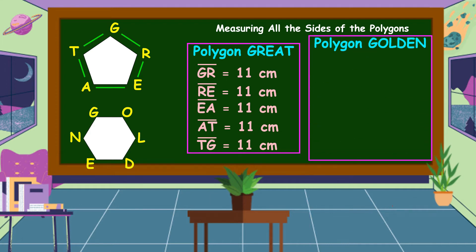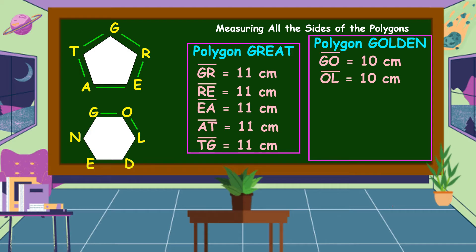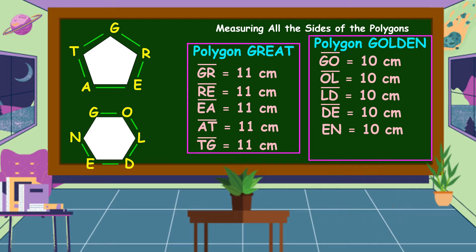For polygon GOLDEN, line segment GO measures 10 cm, line segment OL measures 10 cm, line segment LD measures 10 cm, line segment DE measures 10 cm, and line segment EN measures 10 cm.